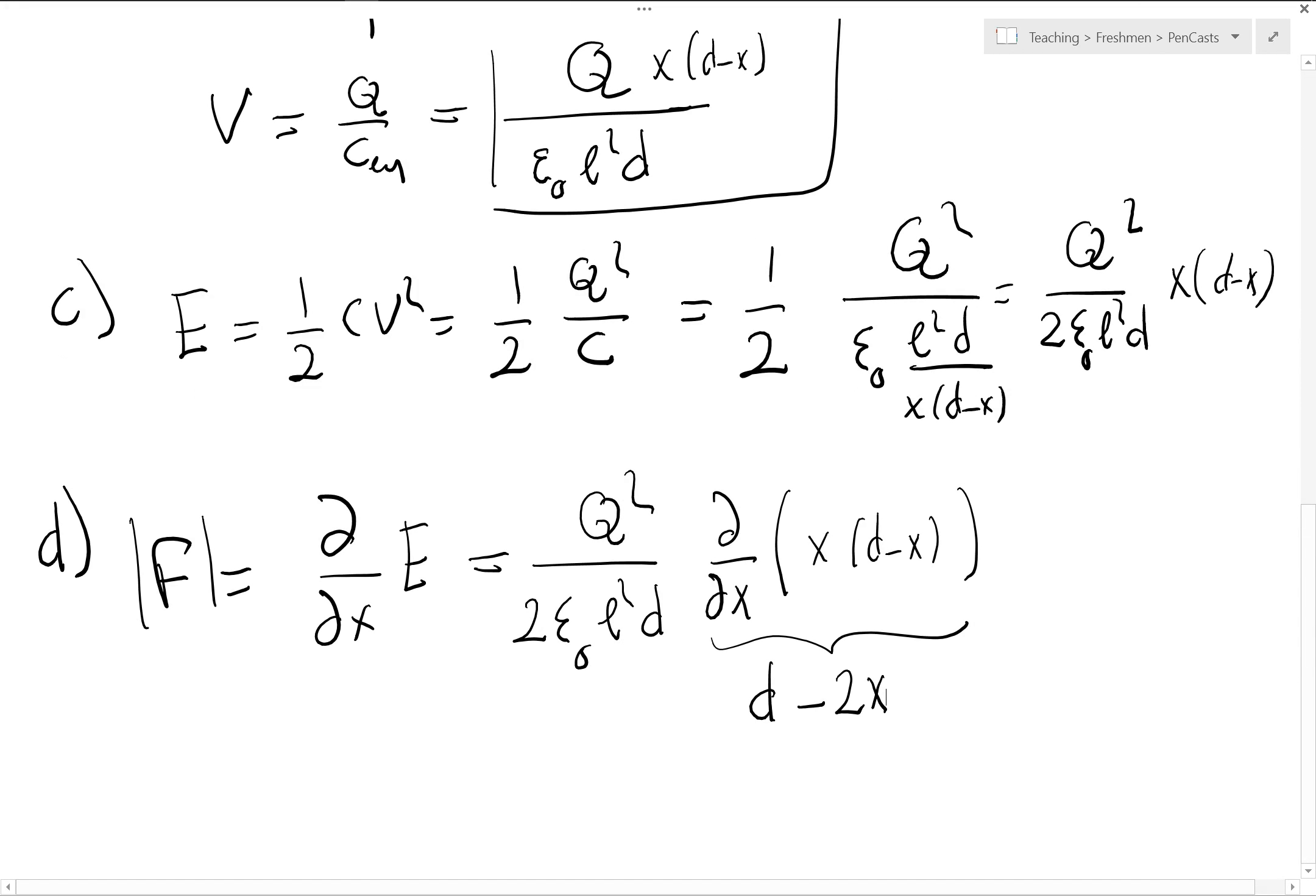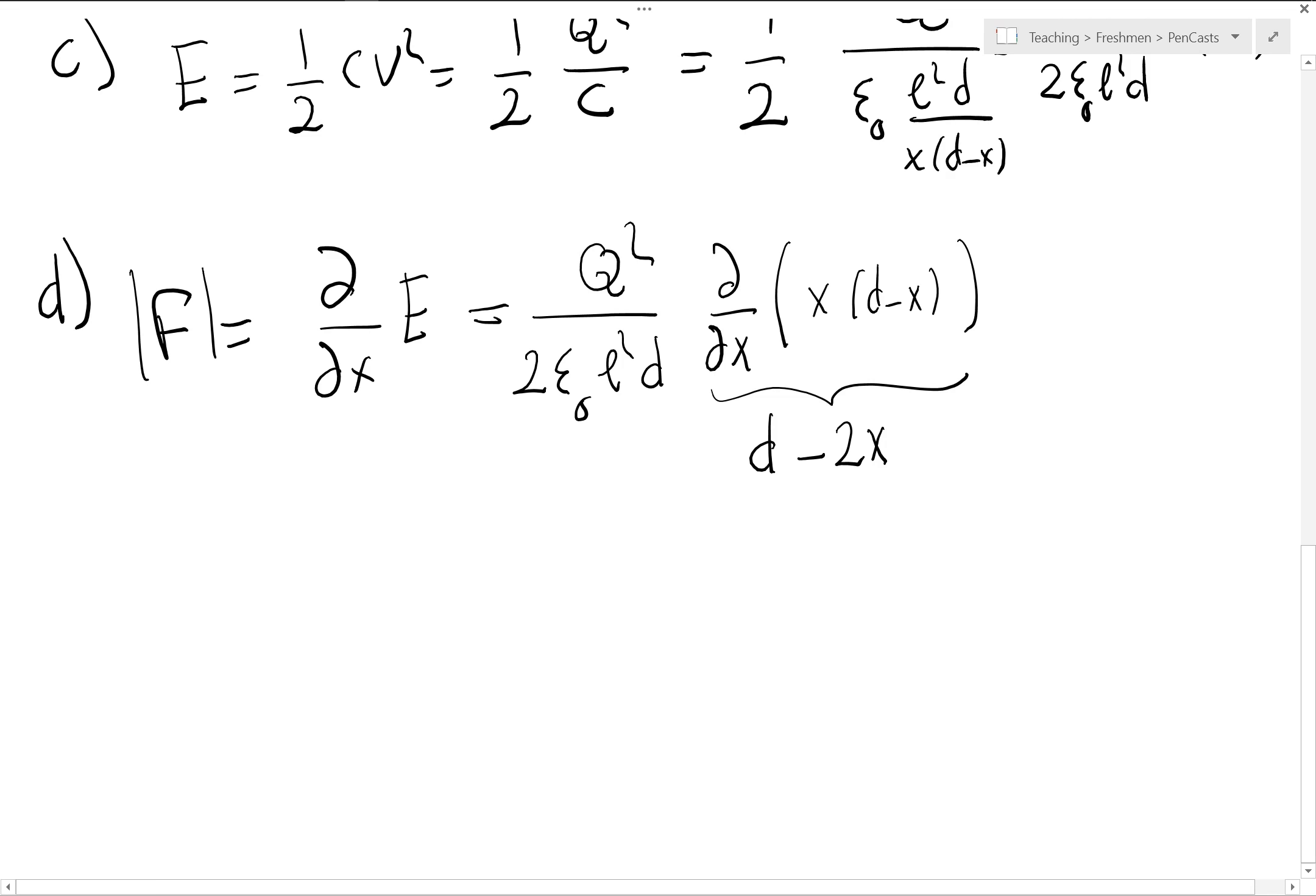Now, 2X can be either larger or smaller than D. So maybe I should, because I'm asked to find the magnitude of this whole thing, I should put the actual derivative signs around it. Q squared over 2 epsilon 0, L squared, D. Magnitude D minus 2X is going to be my force.